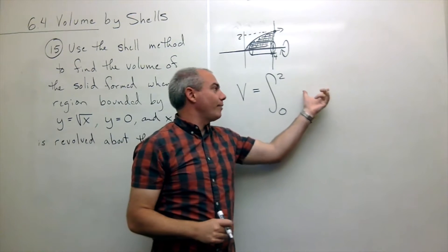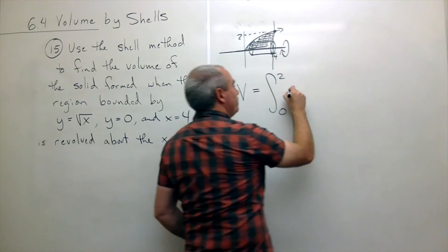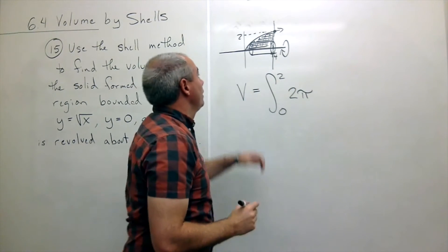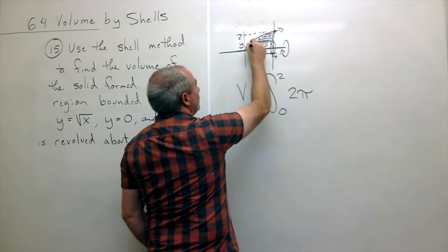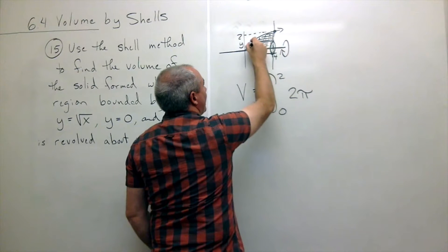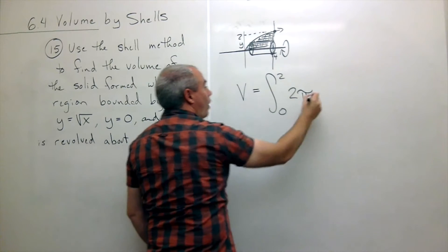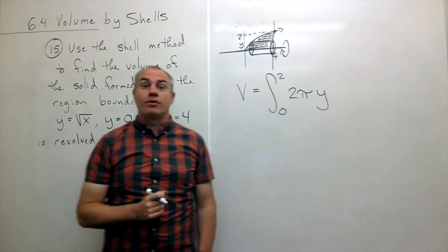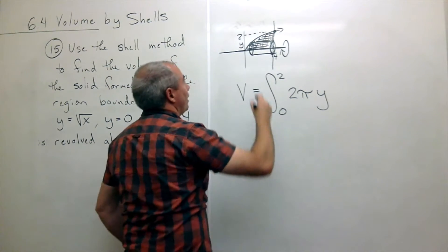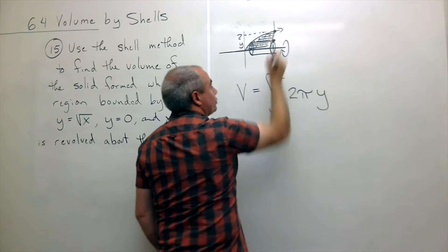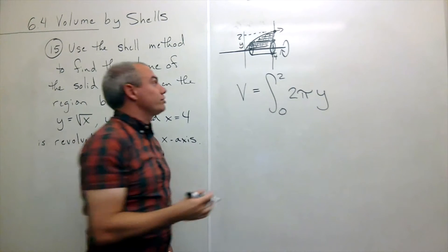And then what goes inside of my integral is 2 pi r h. So 2 pi r, and in this case if I'm just sitting at some y-value with a shell right here, then how far is it to the center of the shell? Well, if I'm sitting at y, it's y to the center of the shell. In other words, my radius is y. And then I need the height of that typical shell. The height of the shell is the top function, which is the function on the right, minus the bottom function, which is the function on the left.